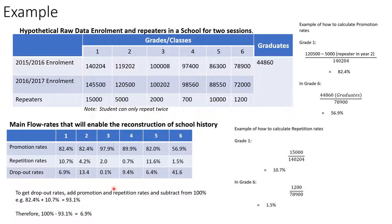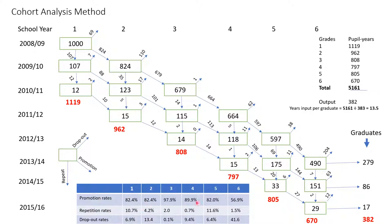We now construct the cohort table for 2000–2009 starting with 1,000 students. Take 82.4 percent of 1,000 to get the number promoted; 10.7 percent of 1,000 gives 107 repeating; and 6.9 percent of 1,000 gives 69 dropouts. The arrows in the diagram indicate direction: upward arrow for dropouts, horizontal arrow for promotions, and downward arrow for repetitions.